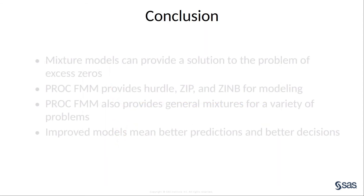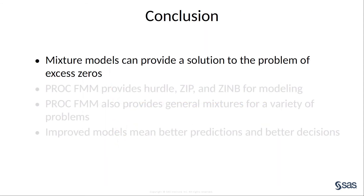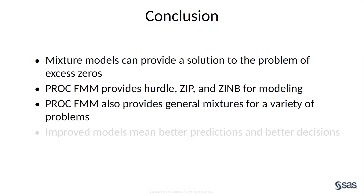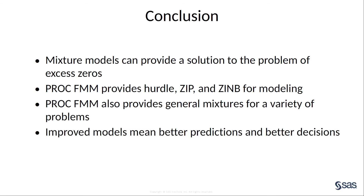So what have you learned today? You can use mixture models to approach problems with apparent excess zeros. PROC FMM provides several options for this situation, including the hurdle model, the ZIP model, and the ZINB model. As you investigate other situations, you can use PROC FMM to create flexible models. And, of course, with better models, you get better predictions and better decisions.